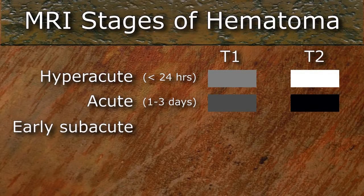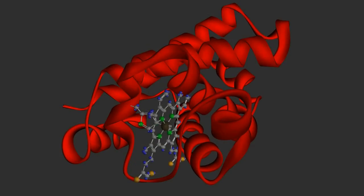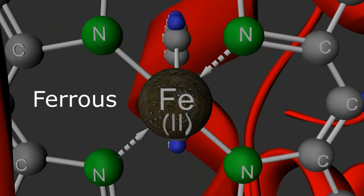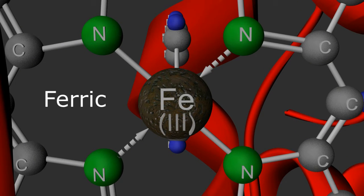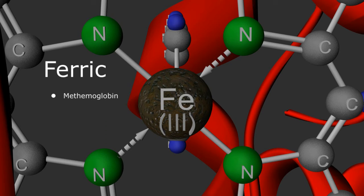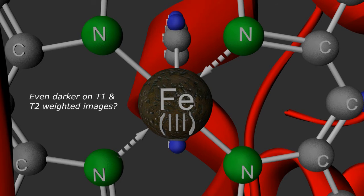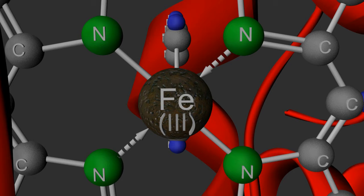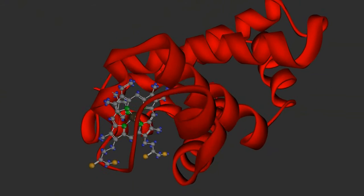The early subacute phase is seen from 3 to 7 days. In the continued absence of oxygen, the ferrous cation at the center of each heme molecule loses one more electron and changes its oxidative state from plus 2 to the ferric form of plus 3. This form of iron is called methemoglobin and has five unpaired electrons, making it even more paramagnetic than deoxyhemoglobin. We would therefore assume it would cause even more dephasing and signal loss than the deoxyhemoglobin of the acute thrombus. However, this conversion to ferric iron is also associated with a conformational change of the surrounding globin molecule.